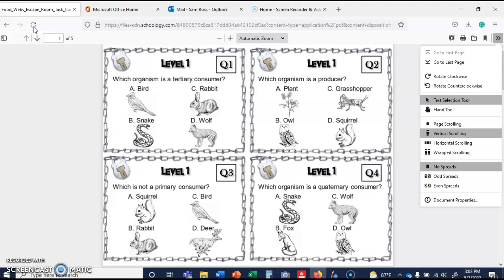Level 1, which organism is a producer? A producer makes its own food through photosynthesis, so you should be able to work that out here. Which is not a primary consumer, so that would be something that eats more than just plants. So let's say a bird eats insects, squirrels eat nuts, so squirrels are probably a primary consumer. Rabbits are probably a primary consumer. I would say the bird is not a primary consumer, so that's C. And then which organism is a quaternary consumer? That's tough. Let's see. So owls eat snakes. Let's say D. D is going to be your quaternary consumer.